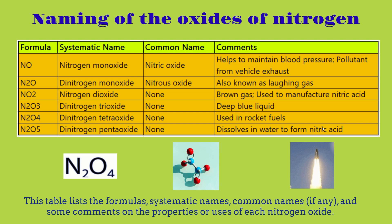We're now going to look at the naming of oxides of nitrogen. When nitrogen is combined with oxygen, it becomes a binary molecular compound. For the formula NO, which is nitrogen monoxide, we have one nitrogen and one oxygen. We get 'mono' because the second element only has one atom. The common name for it is nitric oxide, and it helps maintain blood pressure and is also a pollutant from vehicle exhaust.